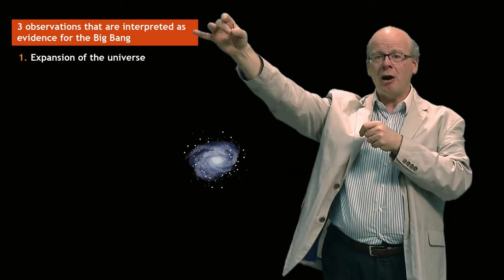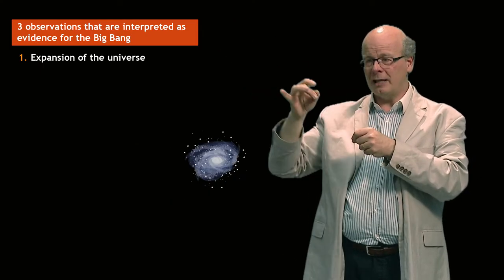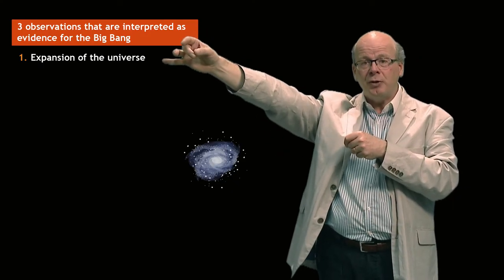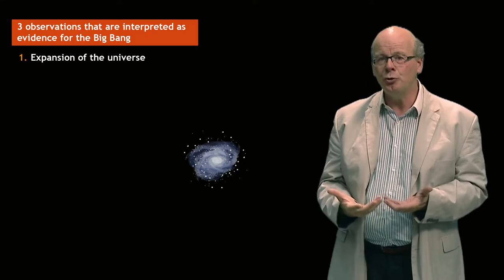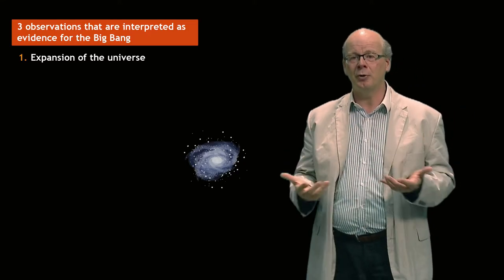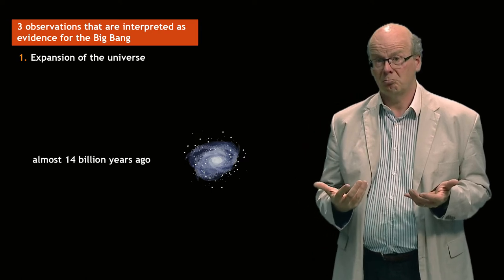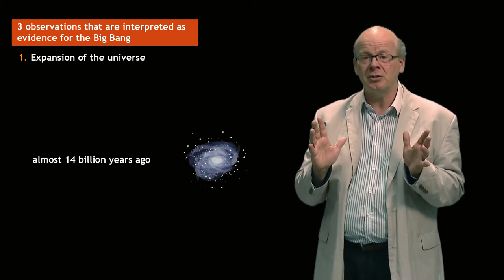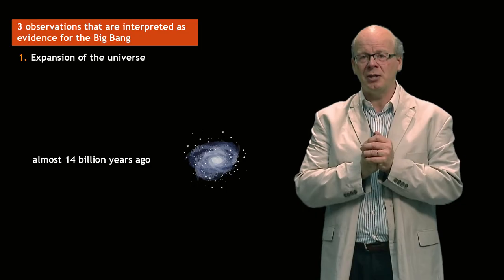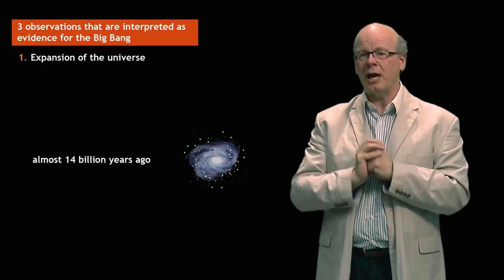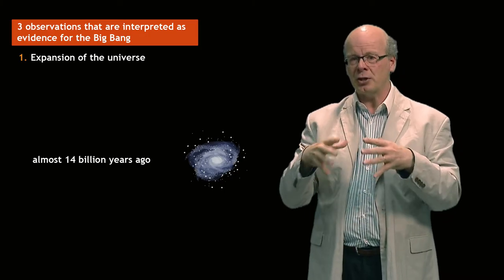If you measure how far away a galaxy is, and then you measure what speed it's going at, then you can calculate how long it took to get there. And if you do that, you find a number that is about 13.7 billion years. Give or take a few percent, all measurements have uncertainty, so I'll say 14 billion years from now. That's the first evidence that the universe had a small beginning.